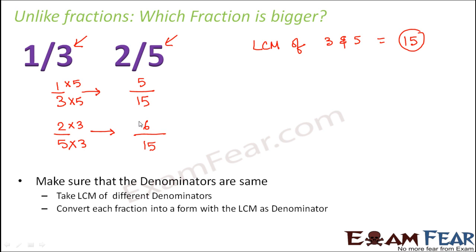Now do you have like fractions? So we have been able to convert the two unlike fractions into like fractions. But at the same time we have not altered their value because 1 by 3 and 5 by 15 they are the same thing. They are equivalent fractions. Similarly 2 by 5 and 6 by 15 are the same thing because they are equivalent fractions again.